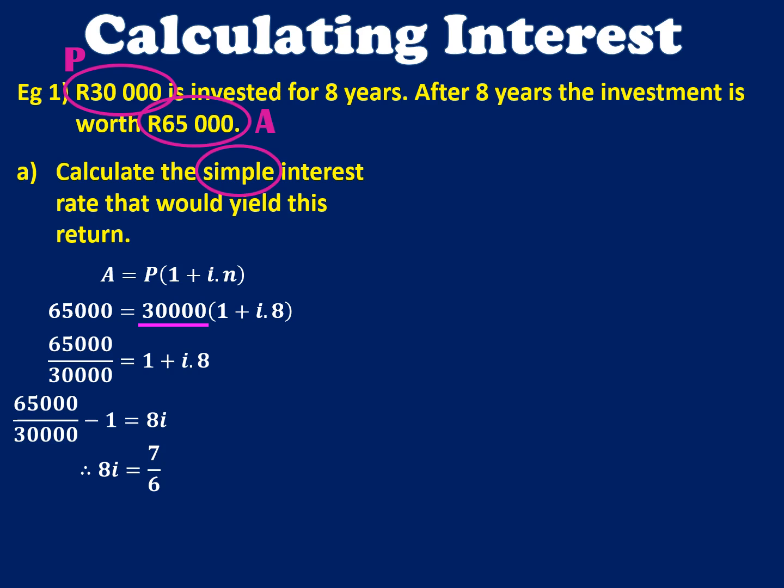So you end up with 8I equal to 7 over 6, or your answer could be in decimals — just don't round off at this stage. If you divide by 8, you end up with I equal to 0.1458. Remember, to use interest we always express it as a decimal, but now they want to know the actual interest rate as a percentage, so we multiply by 100 and get an interest rate of 14.58%.